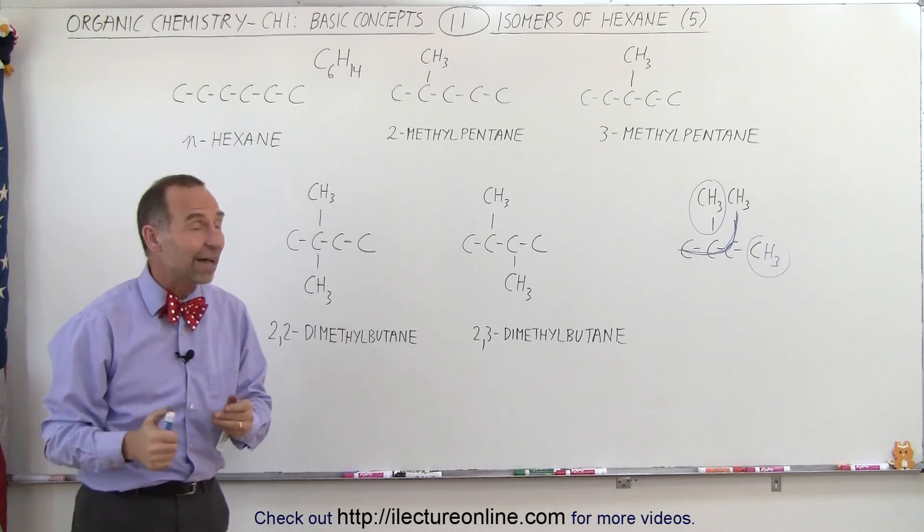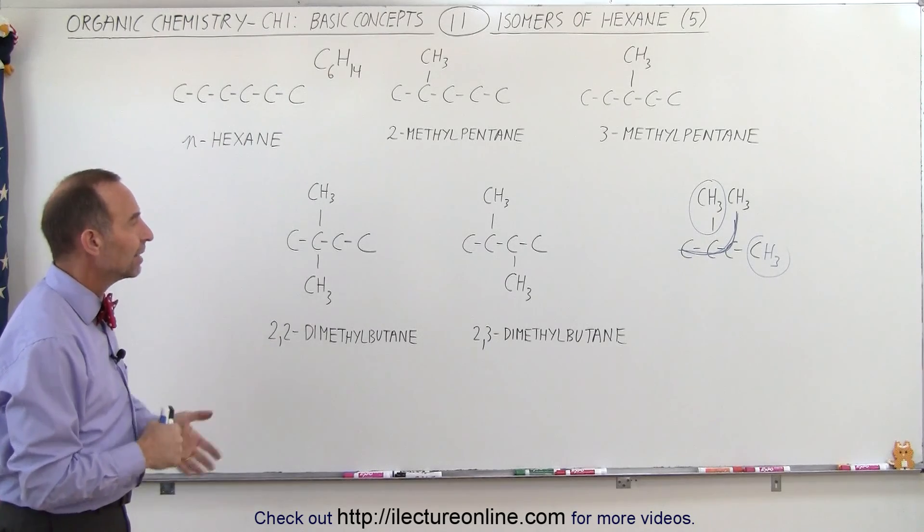So there's only a total of five isomers when it comes to hexane, and these are the ones.